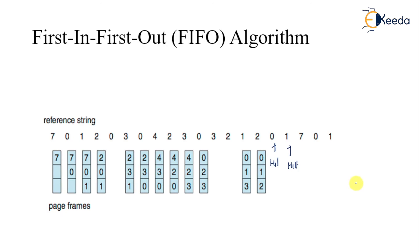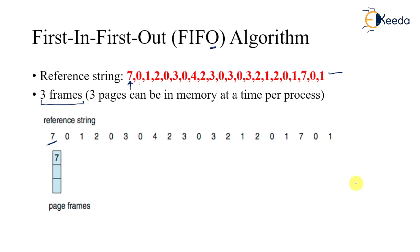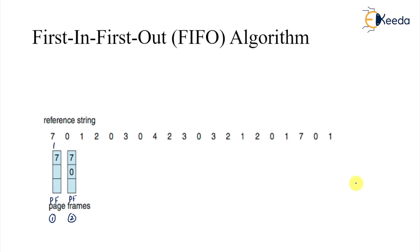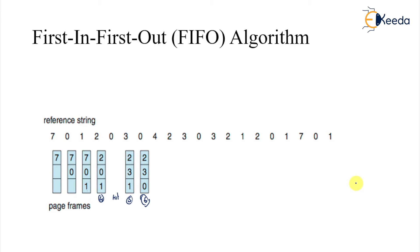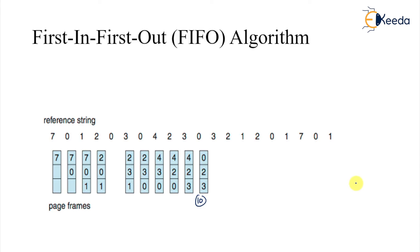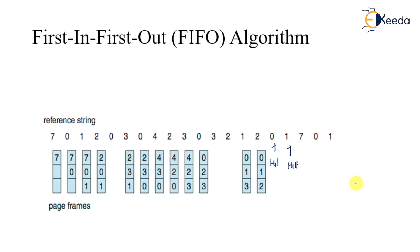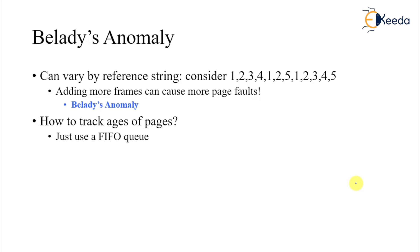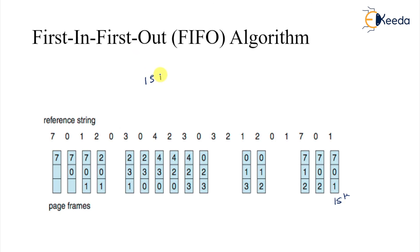This is one of the very common questions asked in gate examination: how many page faults occur? Let's look one more time. With three frames and the reference string: seven, zero, one are page faults one through three; two is the fourth, three is fifth, zero is sixth, one is seventh, two is eighth, three is ninth, zero is tenth. Three and two are hits. Eleventh and twelfth page faults follow. Both hits, then seven is the thirteenth, then fourteenth, then fifteenth. Total: fifteen page faults.